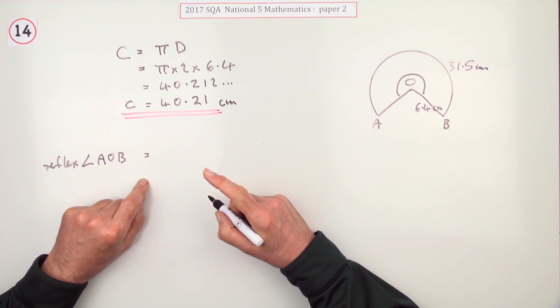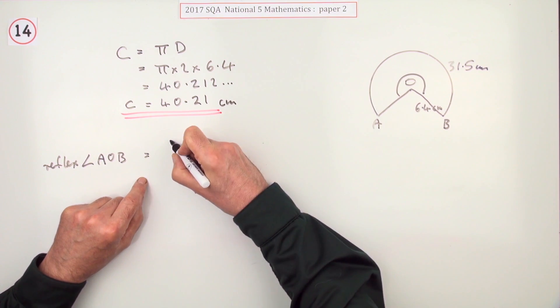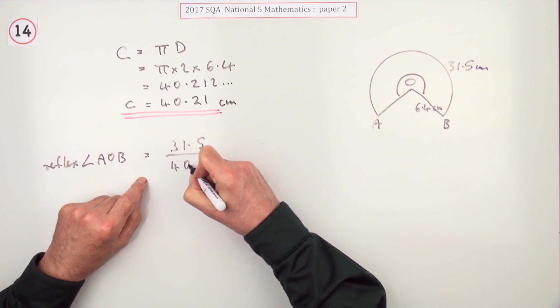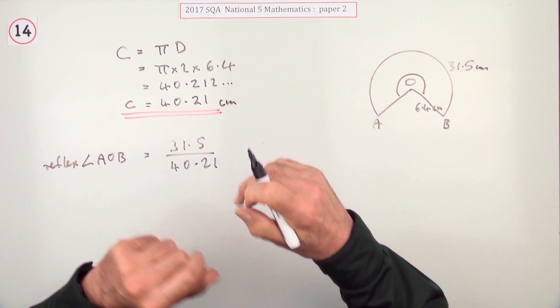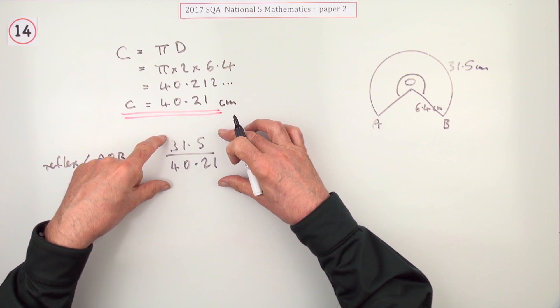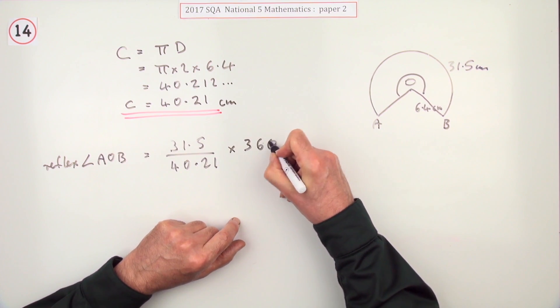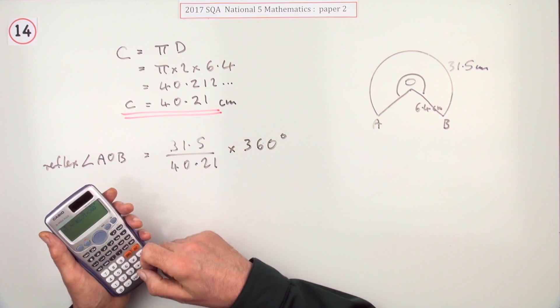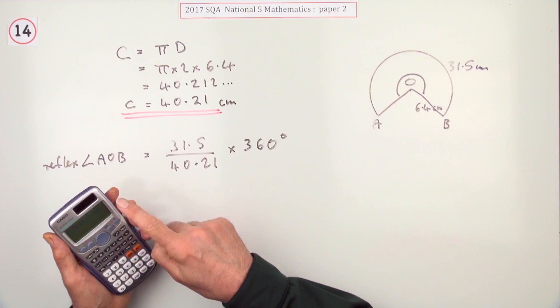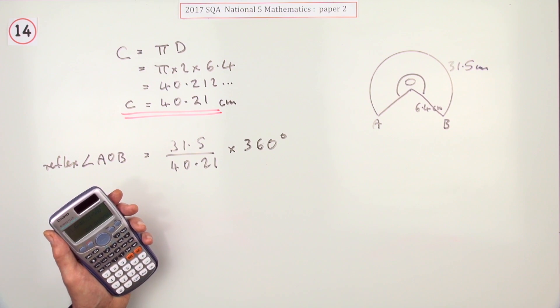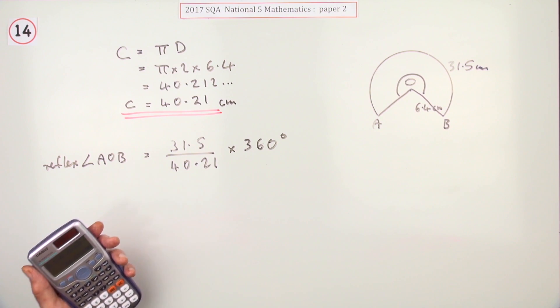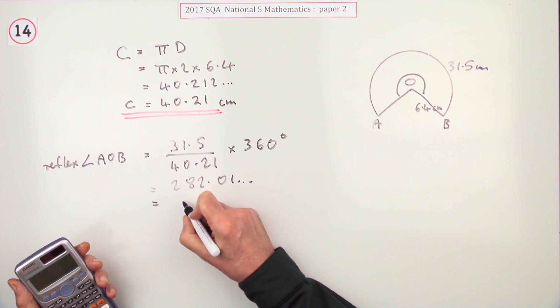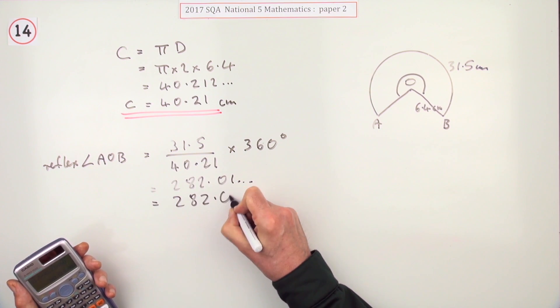The reflex angle is going to be, well what fraction have you got? The arc was 31.5 out of the total arc of 40.21, so that's the fraction of the circle you've got. The angle will be that fraction of the total angle which is 360 degrees. So sticking with 40.21, I get 282.01 and so on. I'll just round it off to 282.0 degrees.